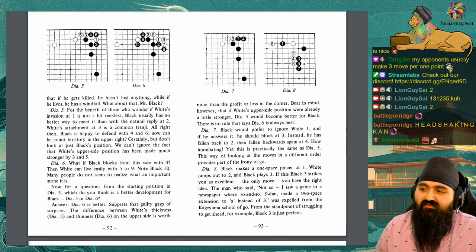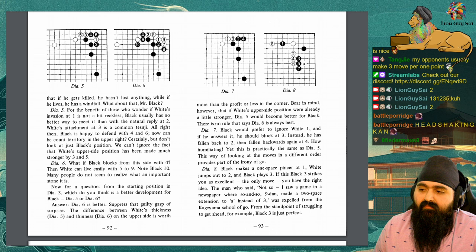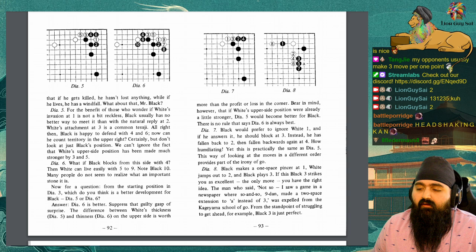Diagram 5. For the benefit of those who wonder if white's invasion at 1 is not a bit reckless, black usually has no better way to meet it than with the natural reply at 2. White's attachment at 3 is a common test of you. Alright then, black is happy to defend with 4 and 6. Now he can count territory in the upper right. Certainly, but don't just look at black's position. We can't ignore the fact that white's upper side position has been made much stronger by 3 and 5.